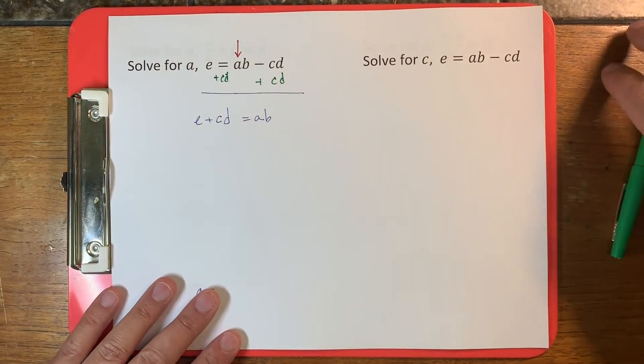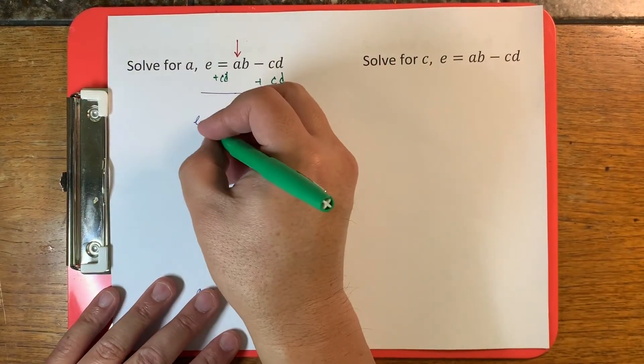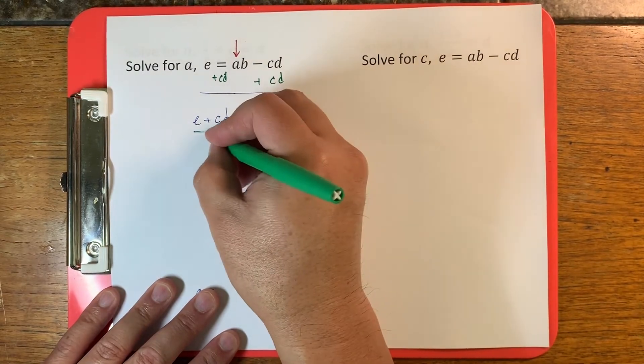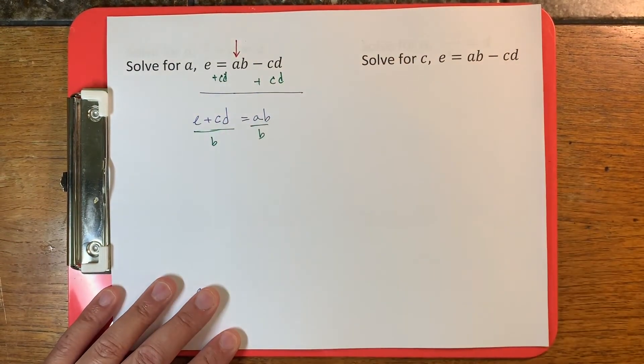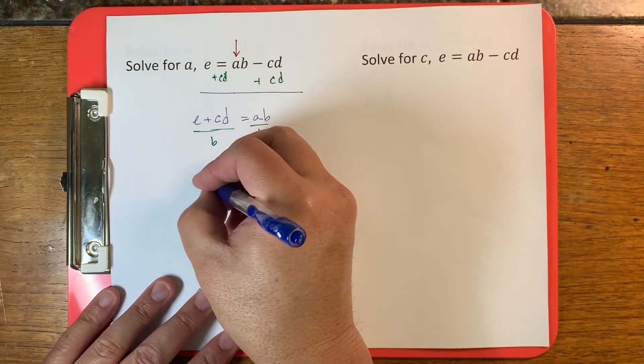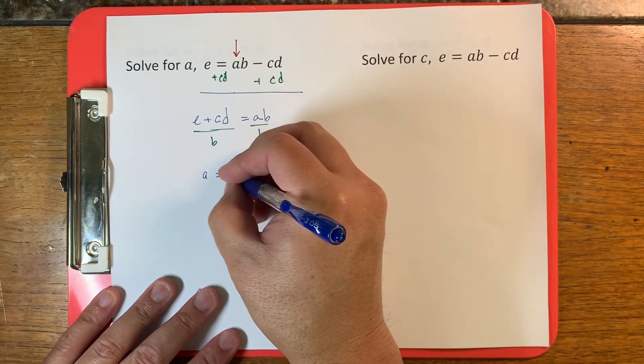Then I'm going to divide both sides by b, and rewrite it nicely so that a is on the left side.